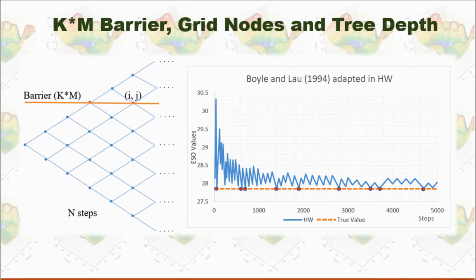And another point is when we decide how many steps we need to evaluate this stock option. In this paper in 1994, Boyle and Lau proved if we have this barrier cross or close to the grid nodes, it will increase the accuracy of the calculation.